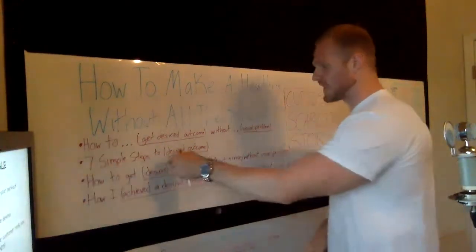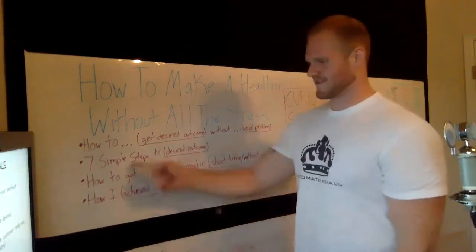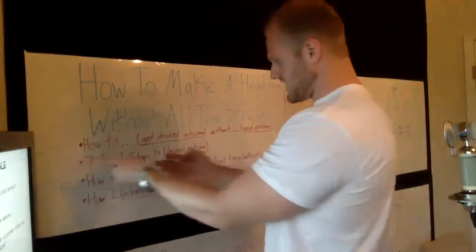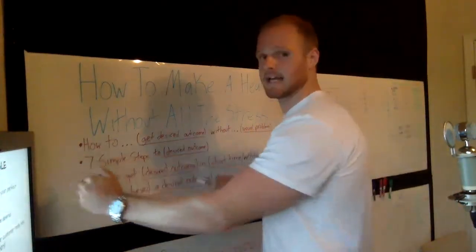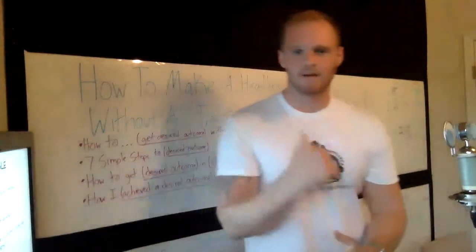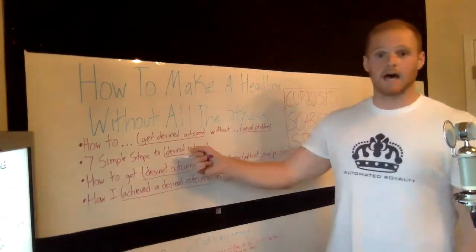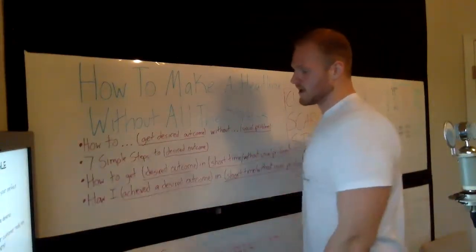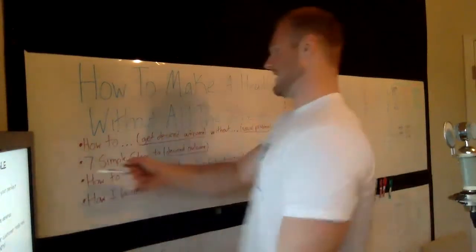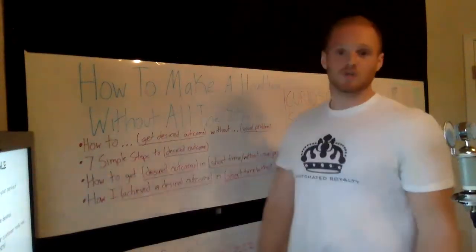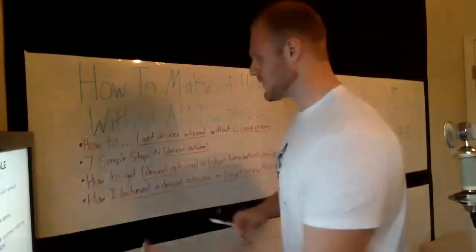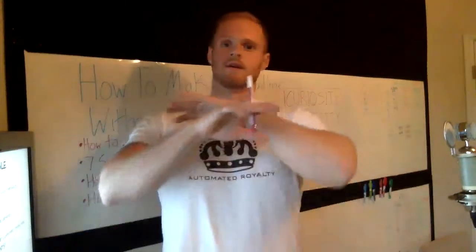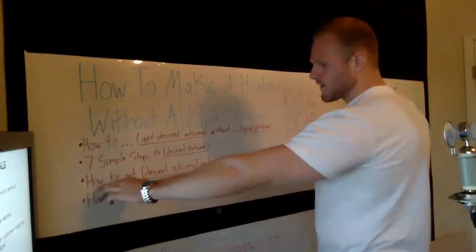The next one is: 'Seven simple steps to [desired outcome].' It's a really simple one — it's short. This isn't the ad text; this is the headline, so you obviously elaborate later. For example: 'Seven simple steps to increase Facebook ad conversions,' 'Seven simple steps to get your dog to learn to go to the bathroom,' 'Seven simple steps to lose fat in 30 days.' So many things you can do with this one.